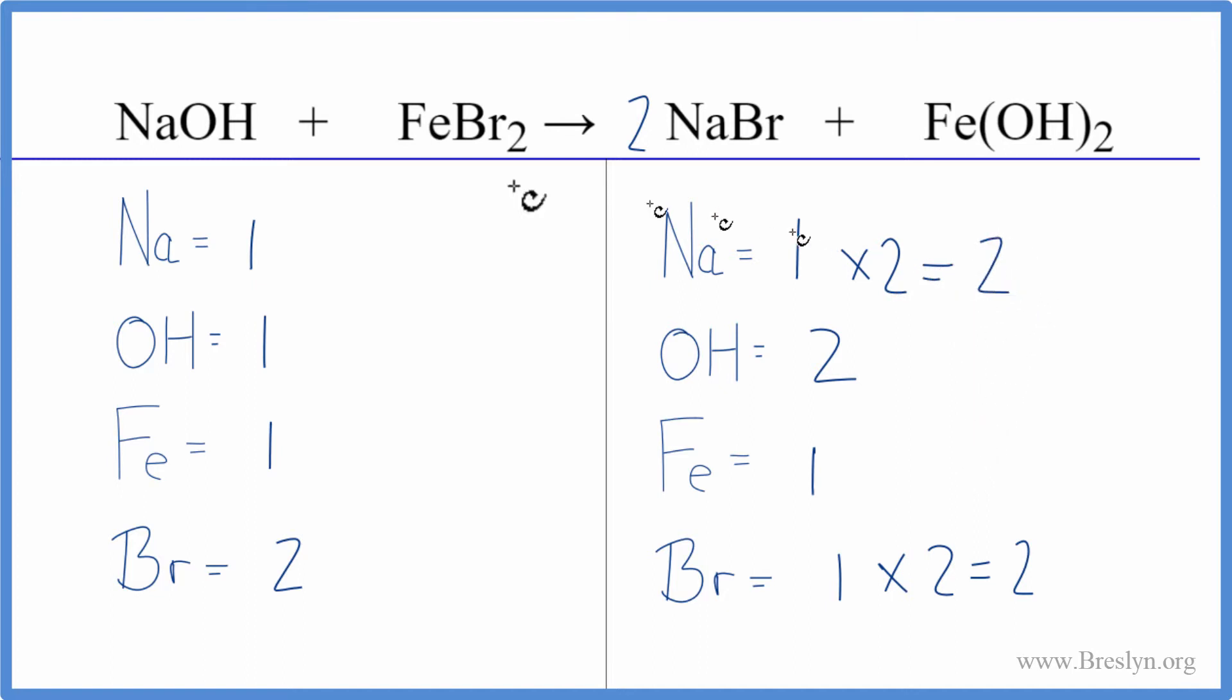Now let's balance the sodiums. We'll put a two in front of the sodium hydroxide, the NaOH. One times two gives us two sodiums, and then one hydroxide times two gives us two hydroxides. And we're done, this equation is balanced.